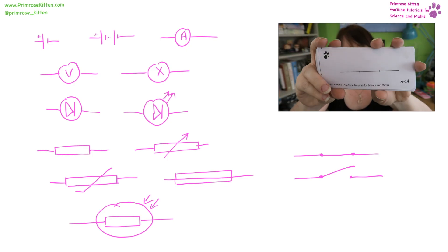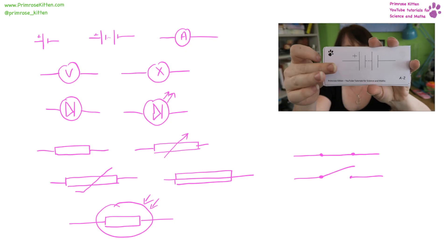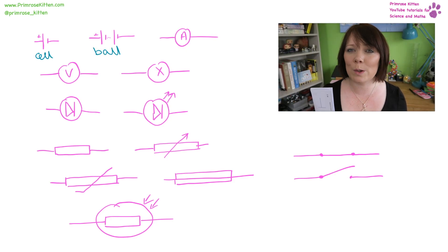You need to know all of these circuit symbols. I've made you handy flashcards for this, but here is a quick recap. This is a cell. This is a battery. You will notice that a battery is more than one cell put together.